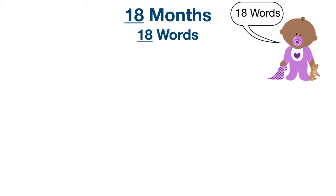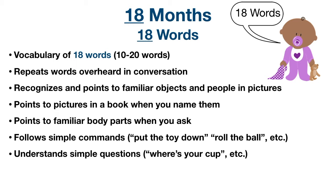Moving on to 18 months, we use the age to remember the milestone of '18 words.' By 18 months the child on average will have a vocabulary of 10 to 20 words. Around 18 months or soon after, the child may have a word spurt in which their vocabulary drastically increases to 50 words. The child also starts to repeat words overheard in conversation and becomes more interactive with their understanding, recognizing and pointing to familiar objects, people, and pictures.